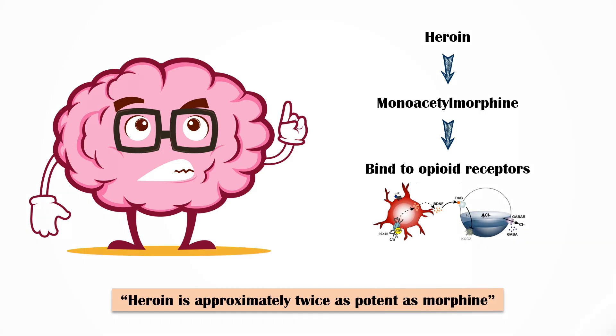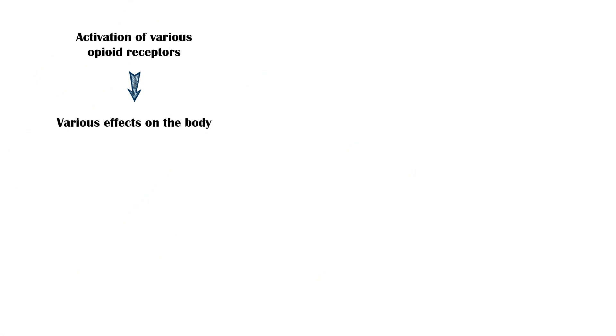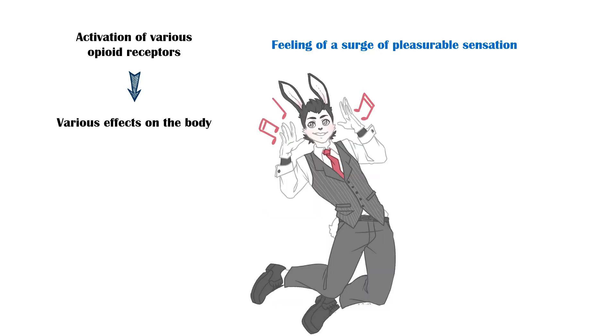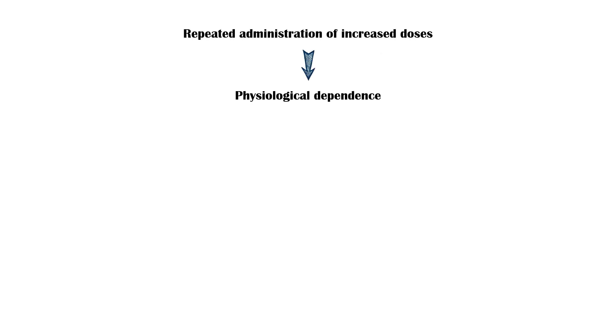Activation of different types of opioid receptors in the brain will lead to various effects on the body. The major effect of heroin intended by the abuser is a feeling of a surge of pleasurable sensation, named as rush, or high.